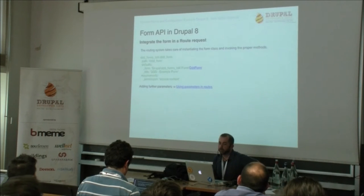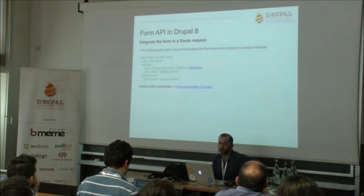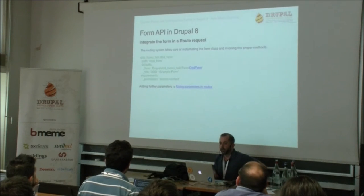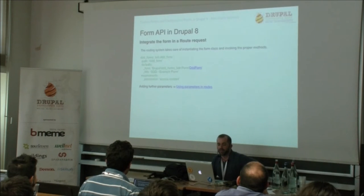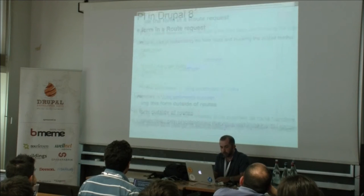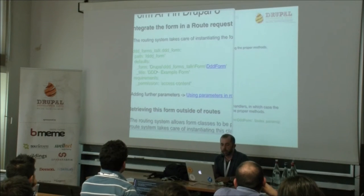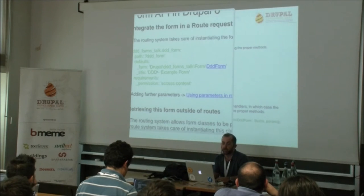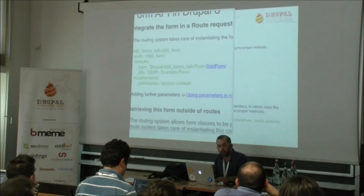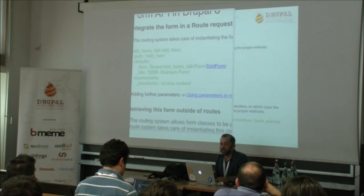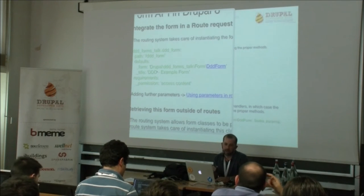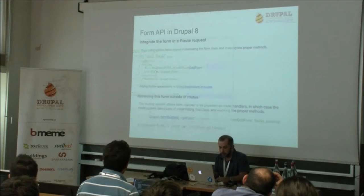We can use forms as a target for a route. Routes in Drupal 8 replace hook_menu from Drupal 7, and are defined in a YAML file. In this YAML file inside the module, we define a route giving it a name and identification, associating a path, and specifying in its properties that a form class will be called instead of a controller — passing the name of the form class file.